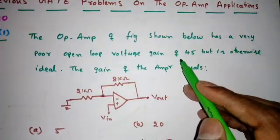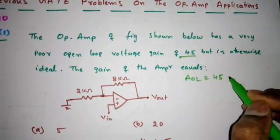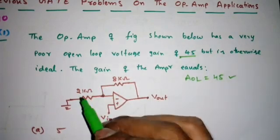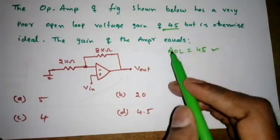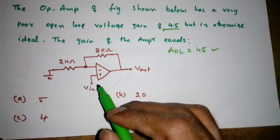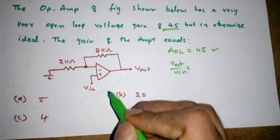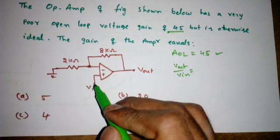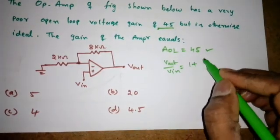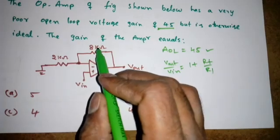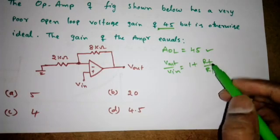The op-amp of the figure shown below has a very poor open-loop voltage gain of 45, so AOL is given as 45, but is otherwise ideal. The gain of the amplifier equals — if the op-amp is ideal we can simply say V_out by V_in. It is a non-inverting amplifier because the input is given to the positive terminal, so it will be 1 plus RF by R1. RF is 8 kΩ and R1 is 2 kΩ, so 8 by 2 is 4, and 1 plus 4 will be 5.